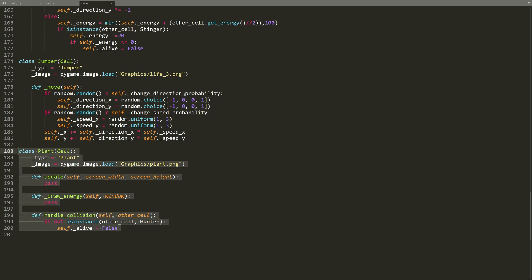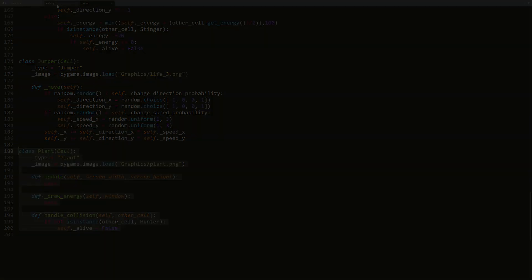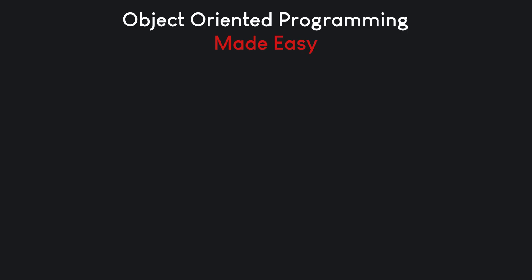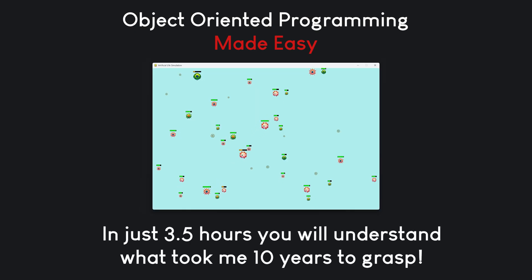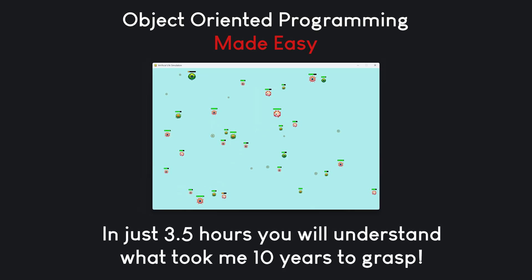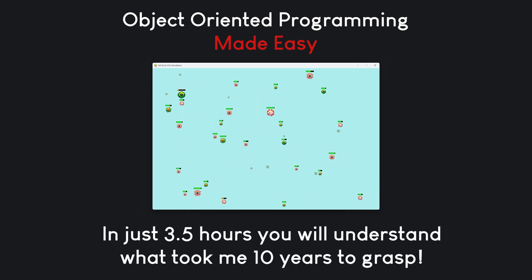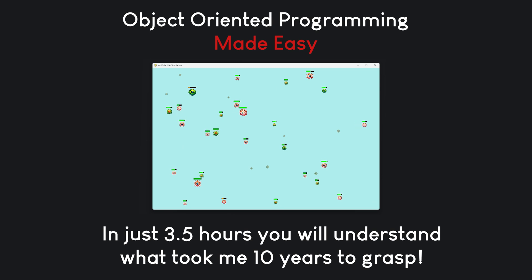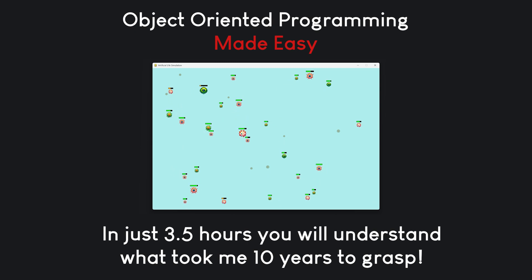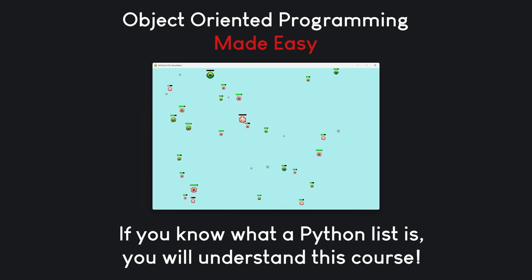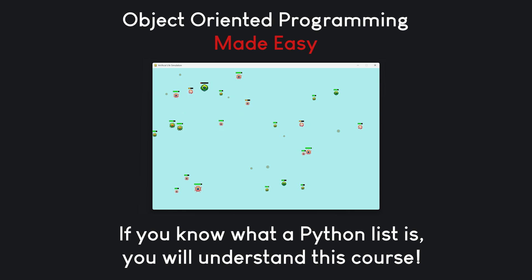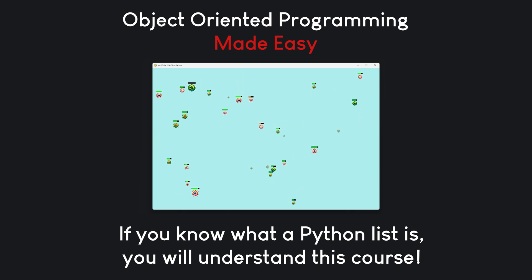That's the power of object-oriented programming, and that's what I'll teach you in this course. In just three and a half hours, we will build this fully interactive digital ecosystem using Python and Pygame. And if you are working with another language — Java, C++ or C Sharp — don't worry. The principles you will learn apply everywhere.